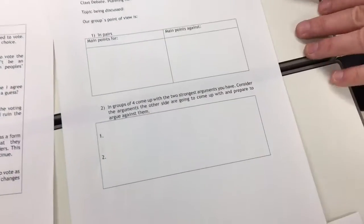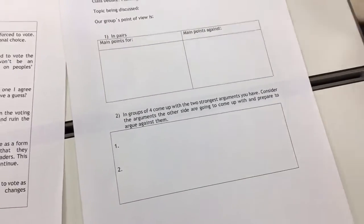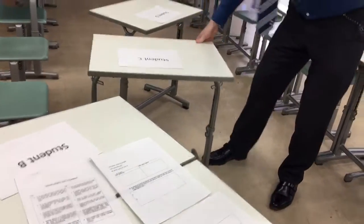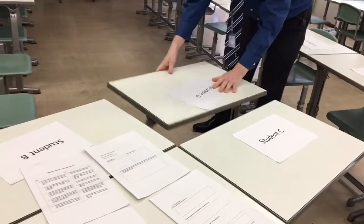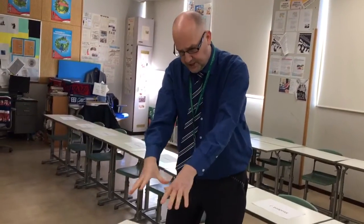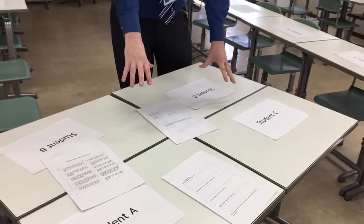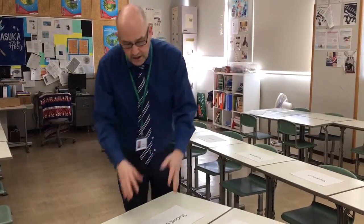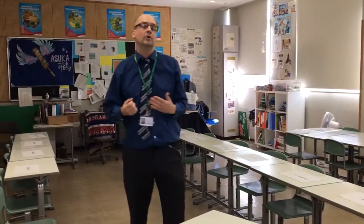Now they go into groups of four on the same side. In their group of four, they have to come up with the two strongest ideas they have. Students A and B have already had their say in pairs, and so have students C and D — they're on the same side. A and B meet up with C and D. There could be four different ideas, three if one overlaps, or even two. In this stage they're actually debating amongst themselves, even though they're on the same side, to come up with the top two ideas.